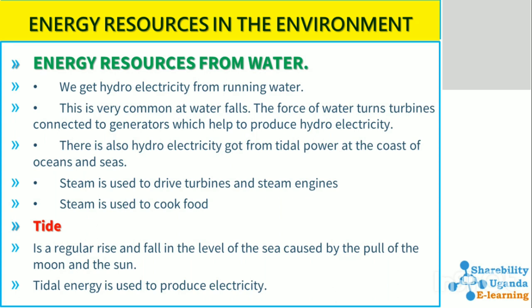Energy resources from water: we get hydroelectricity from running water. For example, the hydropower plant at Owen Falls Dam in Jinja is very common at waterfalls. The force of water turns turbines connected to generators, which help produce hydroelectricity.